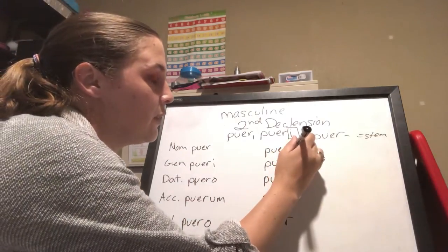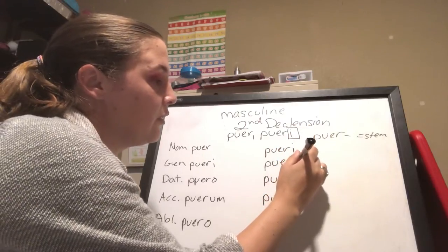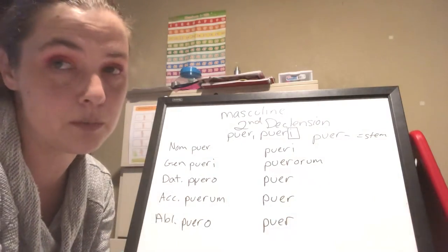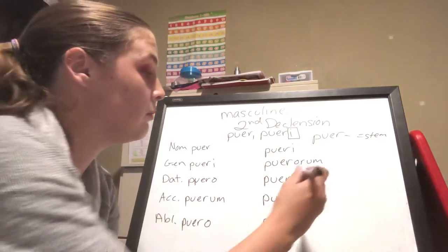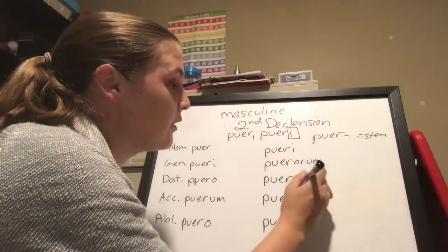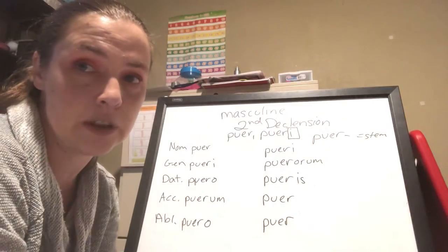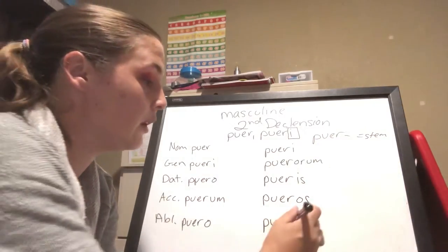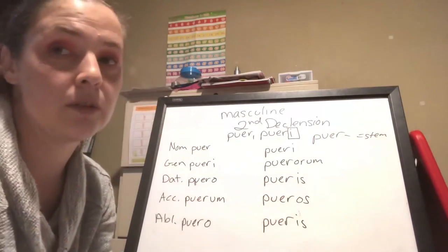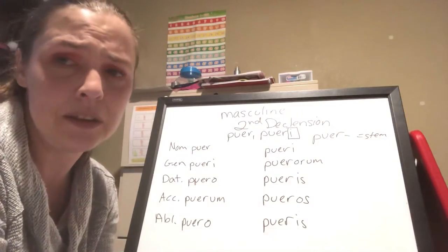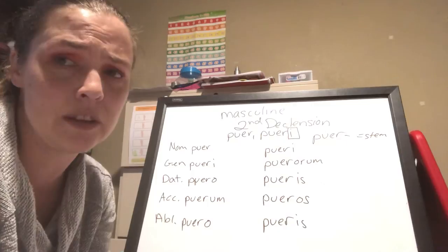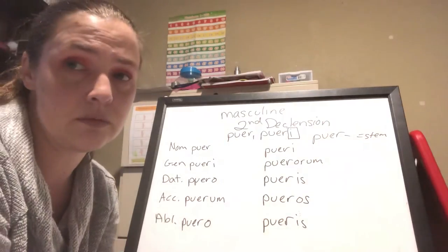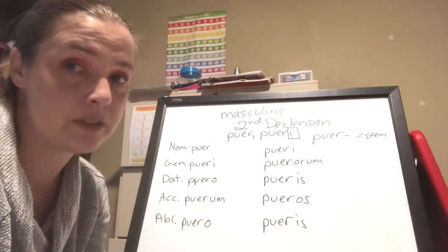In the plural, the nominative is pueri. The genitive plural is puerorum — we had -ARUM before, now we have -ORUM. Then -IS, -OS, -IS again. Familiar, not completely foreign — a little different. This is the ER-ending second declension, all masculine. Puer is the word for boy.